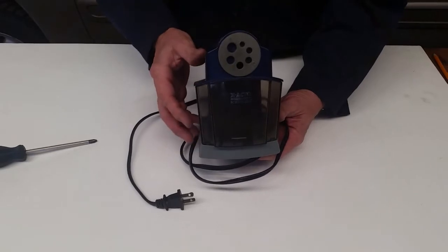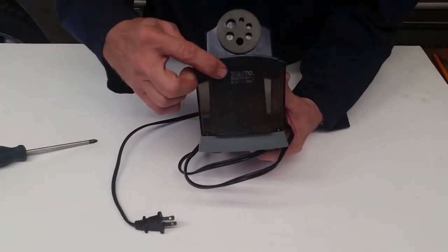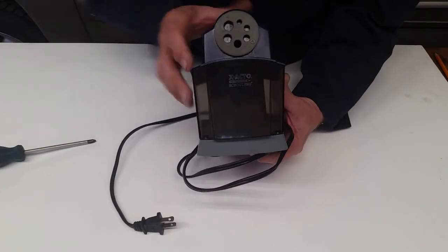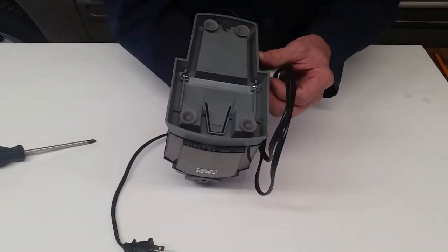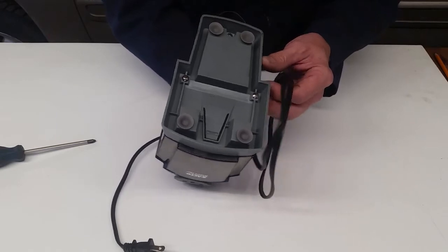It's quite simple, you just have to know how to get into it. This is, as you can see, an X-Acto School Pro. The model number of this one is a 167X.